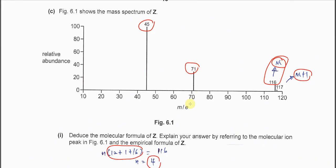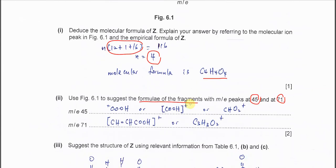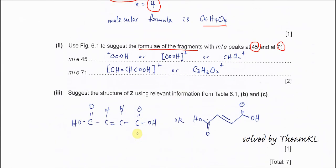It's better to deduce the structure now to get the correct fragments. The structure of Z is COOH-CH=CH-COOH.